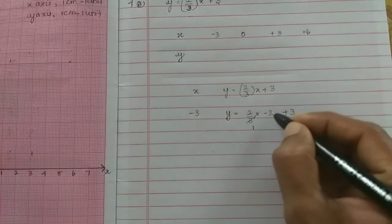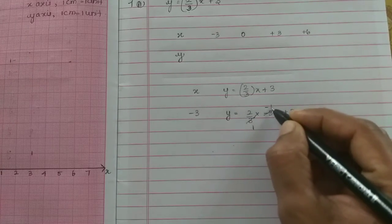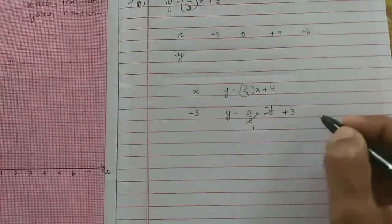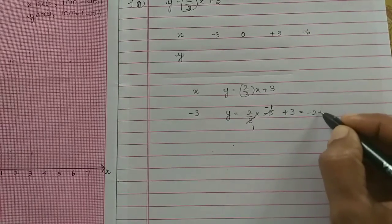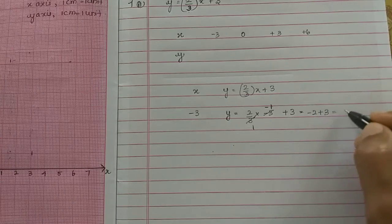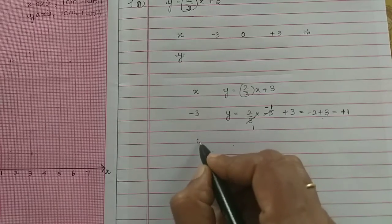So 3 cancels with 3. This is minus 1. So this is minus 1. Right? So y is equal to... this is minus 1.